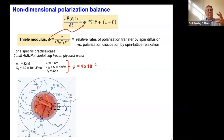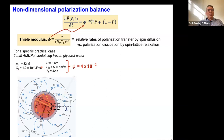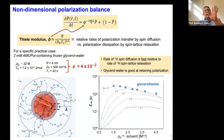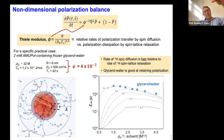For the specific practical case of AMUPOL in frozen glycerol-water DNP juice, with two millimolar AMUPOL and 32 molar proton density, a radical separation of six nanometers, the spin diffusion coefficient from Arthur Pinon's work, a separately measured T1, and a calculated C_Z — everything is known. We calculate a Thiele modulus that's small: four times ten to the minus two. Because this is much less than one, it tells us that the rate of proton spin diffusion is fast relative to the rate of proton spin-lattice relaxation — magnetization is transferred fast compared to how fast spins are relaxing.